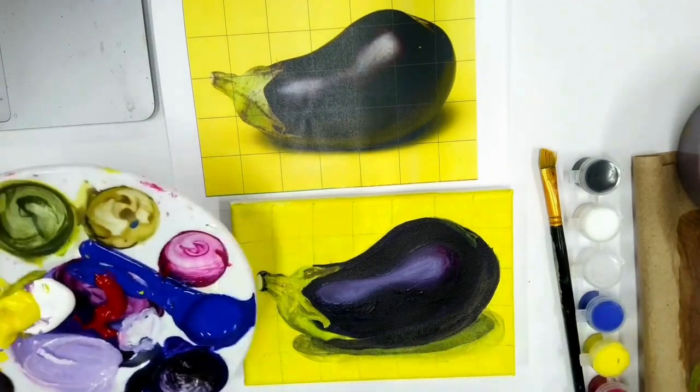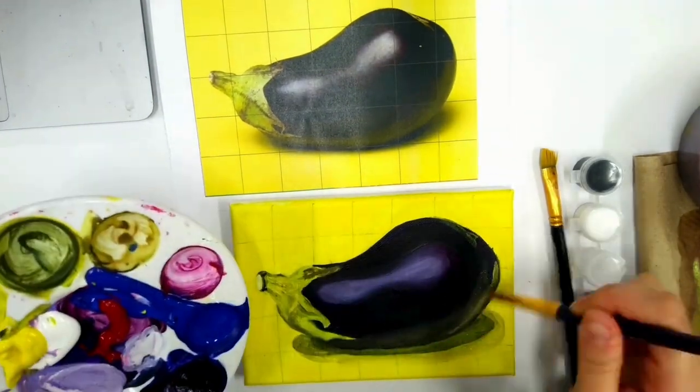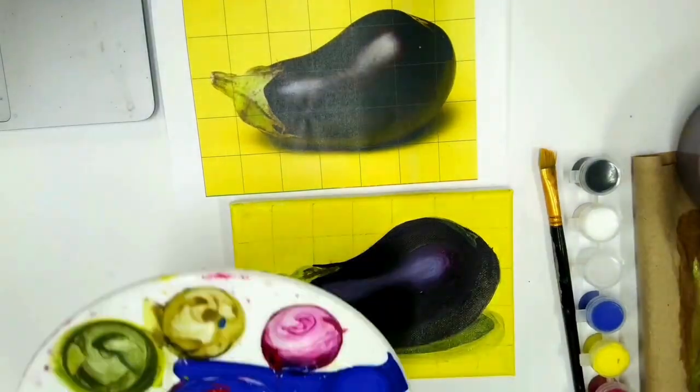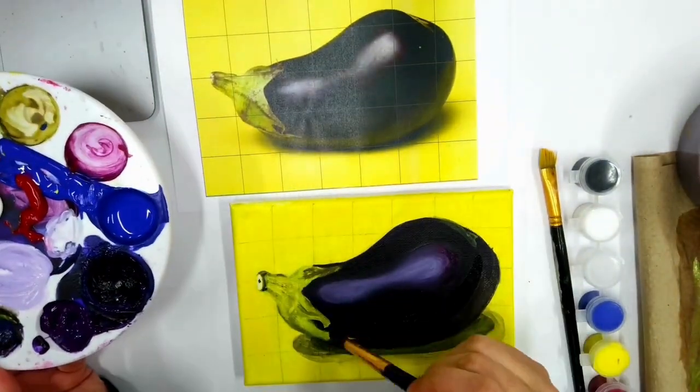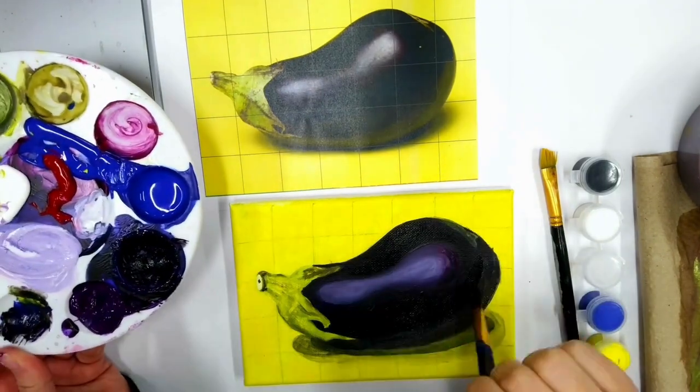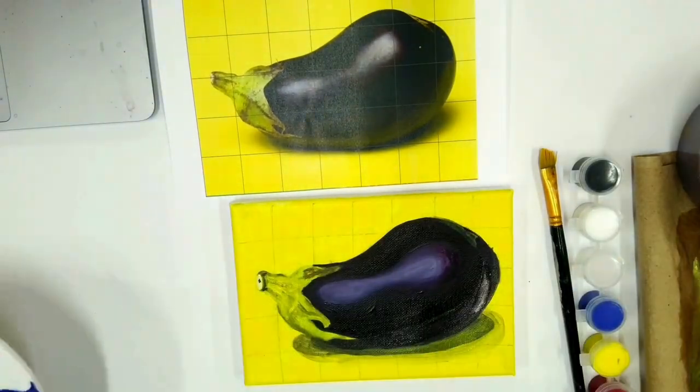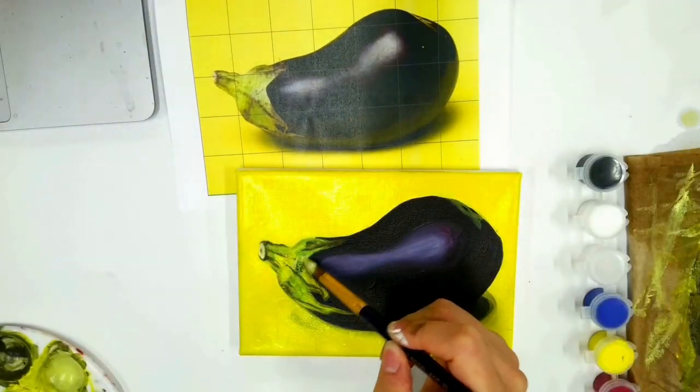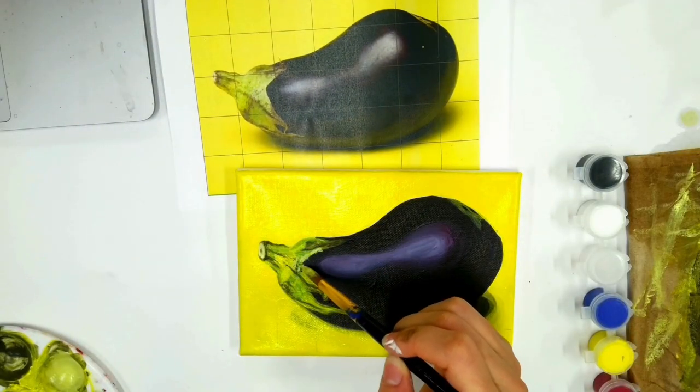Now I'm starting that bottom portion, which is the cast shadow. Notice I'm not putting pure black down either—it's a shade of yellow because the background is yellow and the eggplant is on the yellow, therefore it's not pure black. We had to make it just a darker yellow.